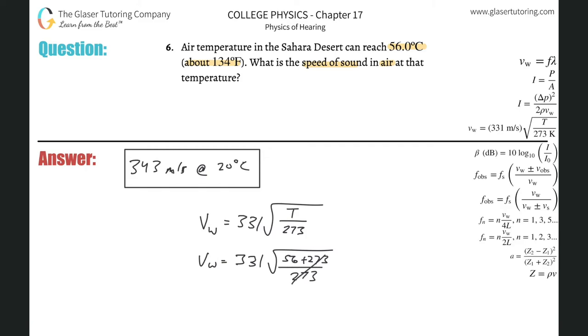Do not cross those out, they do not cancel in that fashion. So the velocity of the sound wave at that temperature will be 331 multiplied by square root of 56 plus 273, divided by 273. And then we get 363 meters per second.